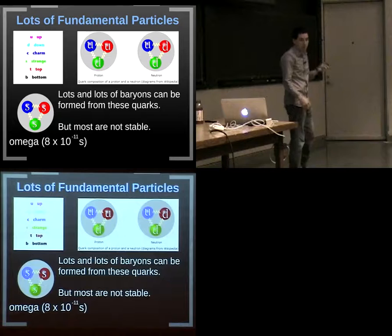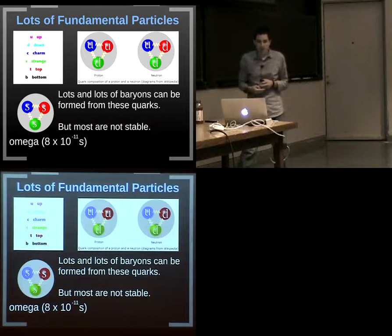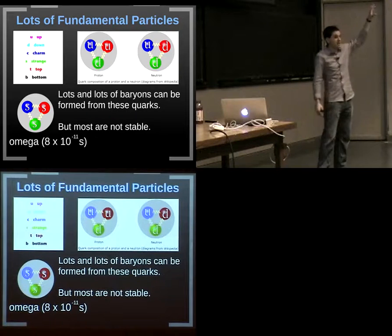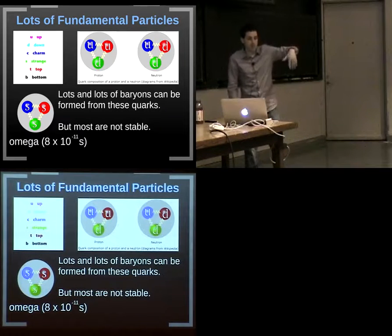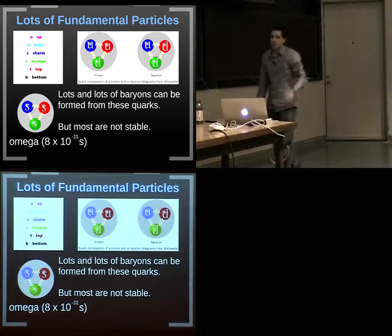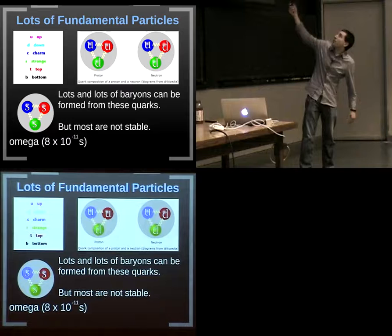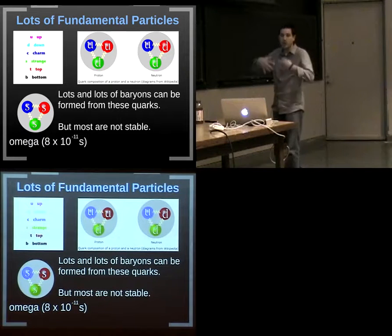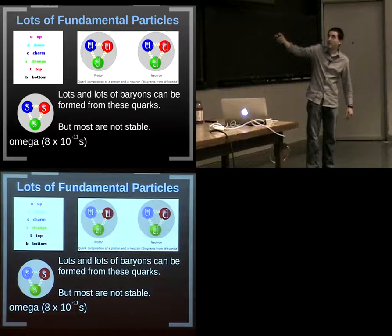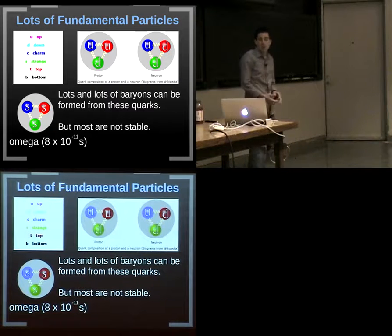There are lots of fundamental particles — not just the up and down quarks, but heavier cousins: charm, strange, top, and bottom quarks. Most aren't stable. In a proton, we have two up quarks and a down quark. Up quarks have charge plus two-thirds; a down quark has minus one-third, giving the proton charge plus one. A neutron has two down quarks and an up quark — two times minus one-third plus two-thirds equals zero, neutral.